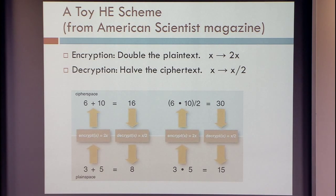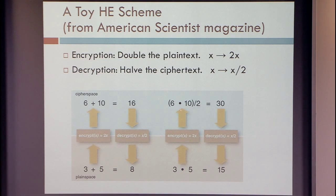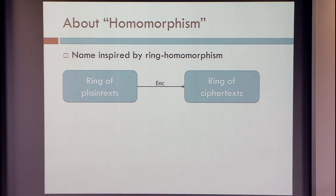Let's start from a toy example. Imagine for a second that multiplication by two was a secure encryption scheme. Then you'd have homomorphic encryption: just multiply everything by two. If you want to add, add the ciphertexts — 3 and 5 is your data, 6 and 10 is the encryption, 16 is indeed an encryption of 8. If you want to multiply, it almost works: 6 and 10 when multiplied give you 60, not 30 — the encryption of 15. You multiply and then divide by 2, and that gives you an encryption. This is a silly example, but it brings across the notion of homomorphism.